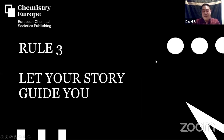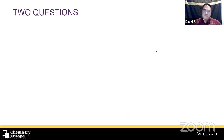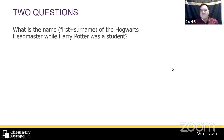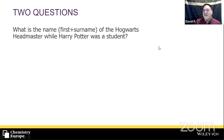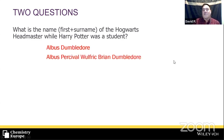Rule number three is to let your story guide you. Let me ask you a question: what is the full name of the Hogwarts headmaster while Harry Potter was a student — the main one who lasted across many books? Many of you will know it's Albus Dumbledore, and if you're a fantasy geek, you'll know the full name is Albus Percival Wulfric Brian Dumbledore.